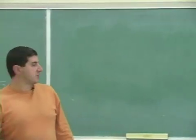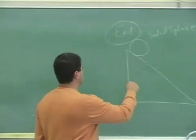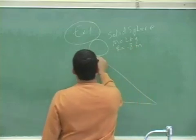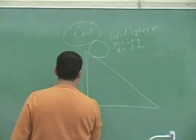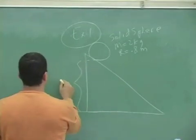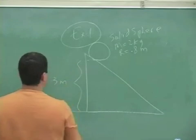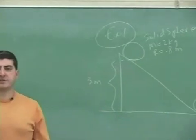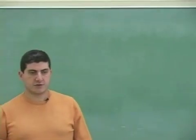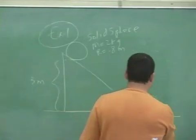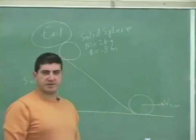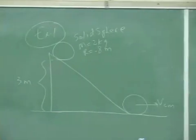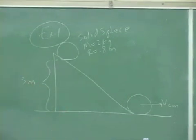Let's say you put a solid spherical ball with mass equal to 2 kilograms, radius equal to 0.8 meters, and the distance from the bottom of the spherical ball to the ground is equal to 3 meters. Find the final velocity of the ball — V center of mass — as the ball reaches the ground. From there you could also find the time, the acceleration, and so on.